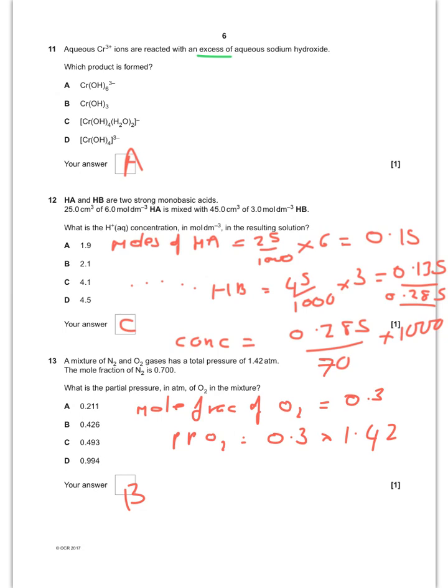HA and HB are two strong monobasic acids. What's the concentration of H plus once you've mixed those two together? Okay, so first thing you find the moles of HA, which is 0.15. And then you find the number of moles of HB, which is going to be 0.135. Add them together to give you 0.285. And then you hopefully realise that if you add that and that together, your total volume is now 70 centimetres cubed. So moles divided by volume times 1,000 gives you your concentration and your answer will be C.